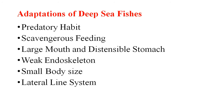One more adaptation is the large mouth and distensible stomach. Deep sea animals are well equipped with a large mouth, wide buccal cavity, well-developed dentition, and a distensible stomach. These features help deep sea animals to swallow prey larger than themselves. An example is Chiasmodon niger, the great swallower, which has a very wide mouth.